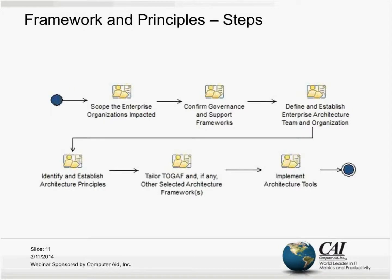Phases A through F are really what an enterprise architecture project is about. The whole idea behind the ADM is to provide organizations the ability to transform and manage their architecture landscape in a controlled fashion, in a way that has appropriate responses to changes in our business and technology environment. In the Preliminary Phase — Framework and Principles — the ADM describes a very high-level six-step process for establishing the architecture capability. The first thing we need to do is scope the enterprise organizations that are impacted, really trying to understand the scope of architecture influence.